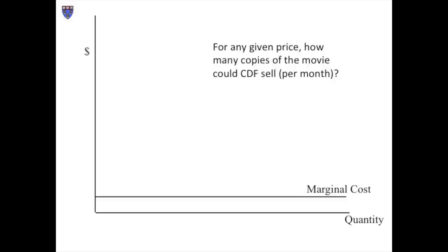If CDF set the price up high, a modest number of people would pay for it each month — the high price would keep it out of the hands of most potential customers. If, by contrast, it's priced at a lower point, the number of people who would purchase it is larger; a still lower price yields a still larger number of purchasers. And if CDF priced it at zero — in other words, if they just gave the DVDs away — an even larger number of people would accept it and watch it each month. The total number of copies sold would be greatest if the price were zero.